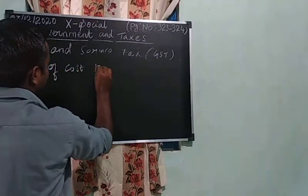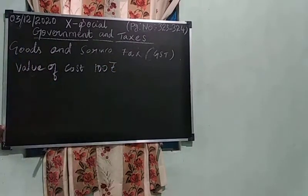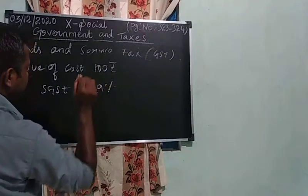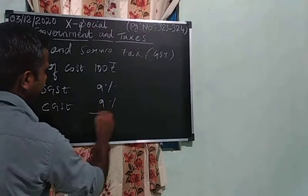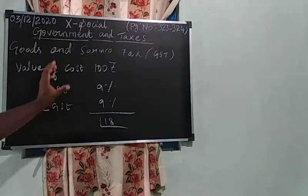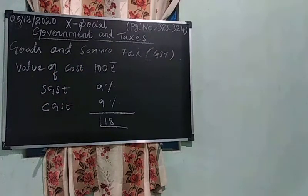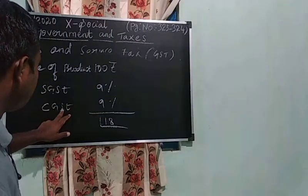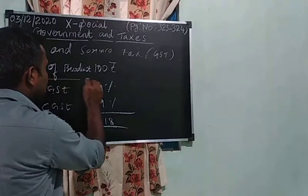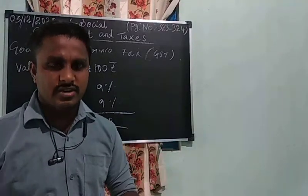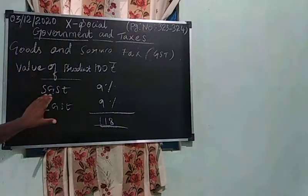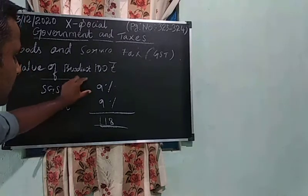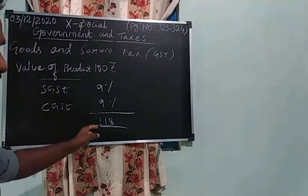For example, if the value of a product is 100 rupees, SGST collects 9% and CGST collects 9%, so the total is 18 rupees. The total cost of the product becomes 118 rupees. If you see your shopping bill, you can understand SGST and CGST — 9 rupees goes to the state government and 9 rupees goes to the central government.